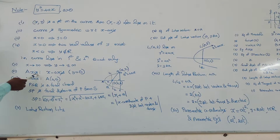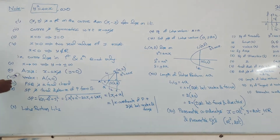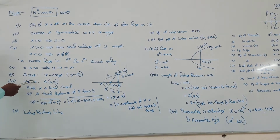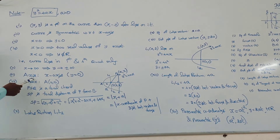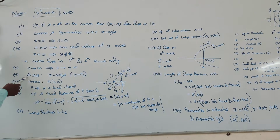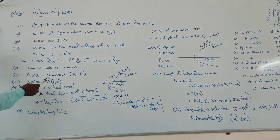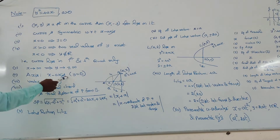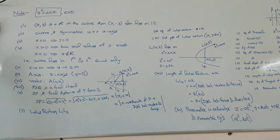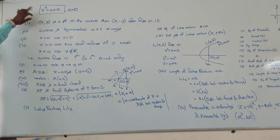Next, the equation of the axis. The axis is defined as the line passing through the focus and perpendicular to the directrix. That is, the x-axis is the equation of the axis for y² = 4x.